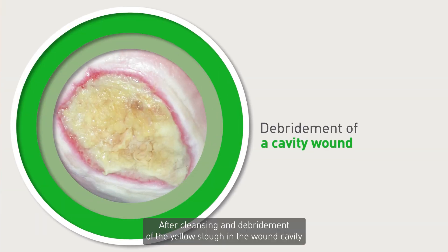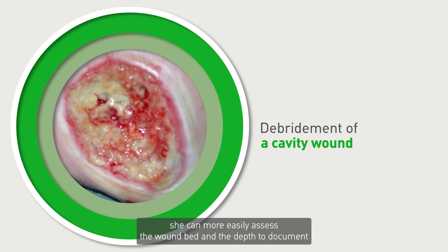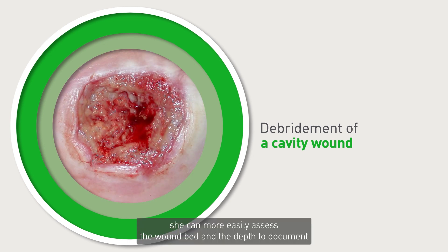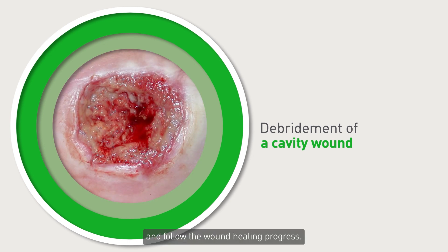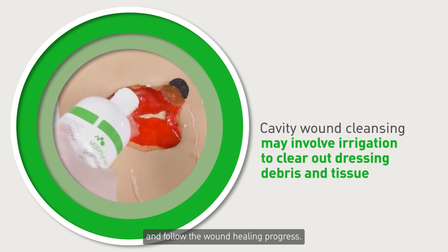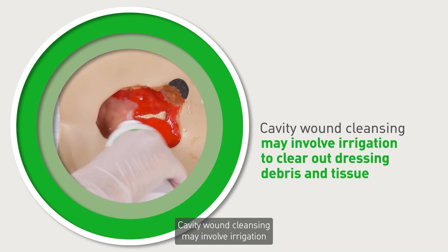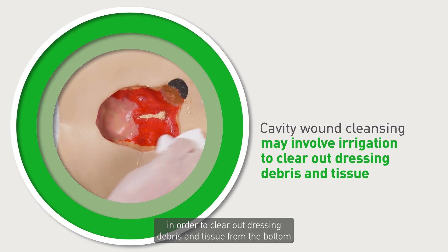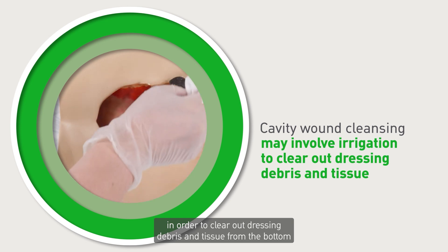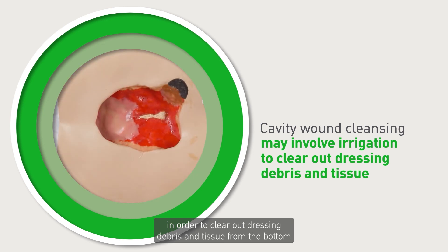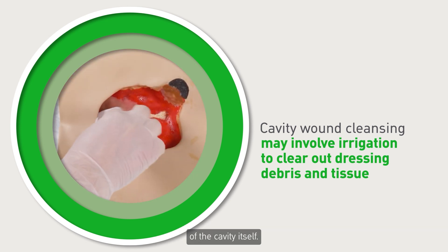After cleansing and debridement of the yellow slough in the wound cavity, she can more easily assess the wound bed and the depth to document and follow the wound healing progress. Cavity wound cleansing may involve irrigation in order to clear out dressing debris and tissue from the bottom of the cavity itself.